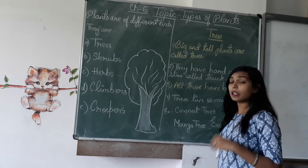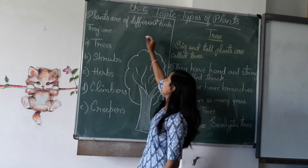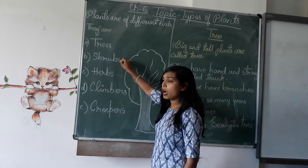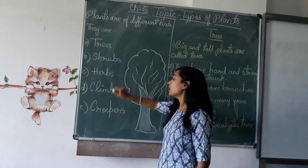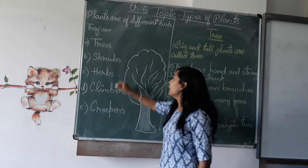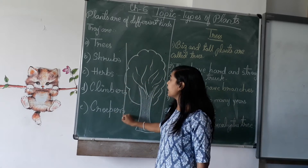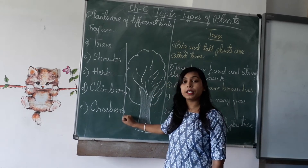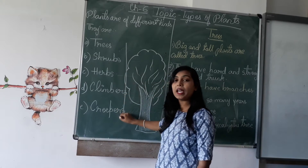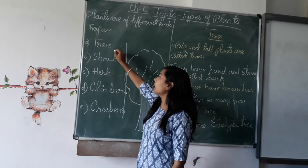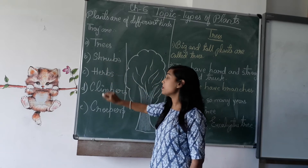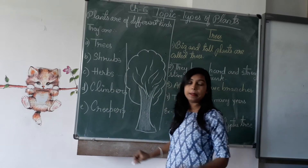Again, to recall: the different categories are trees, shrubs, herbs, climbers, and creepers. These are the categories of plants. Plants are divided into five categories: trees, shrubs, herbs, climbers, and creepers.